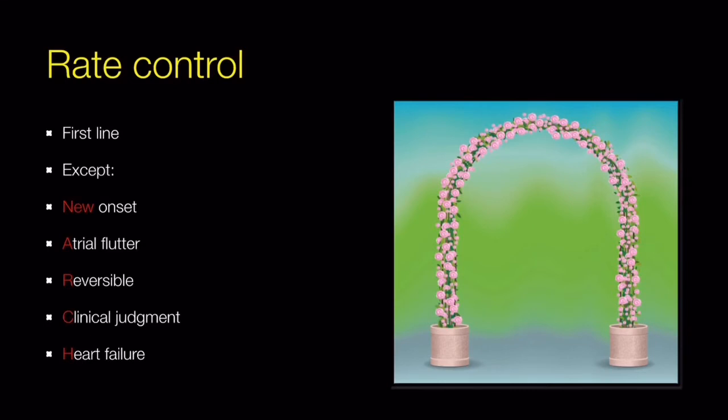The other exceptions are: A — atrial flutter; R — reversible cause for atrial fibrillation; T — clinical judgment where rate control is not possible; and S — heart failure secondary to atrial fibrillation where rhythm control may be preferred.